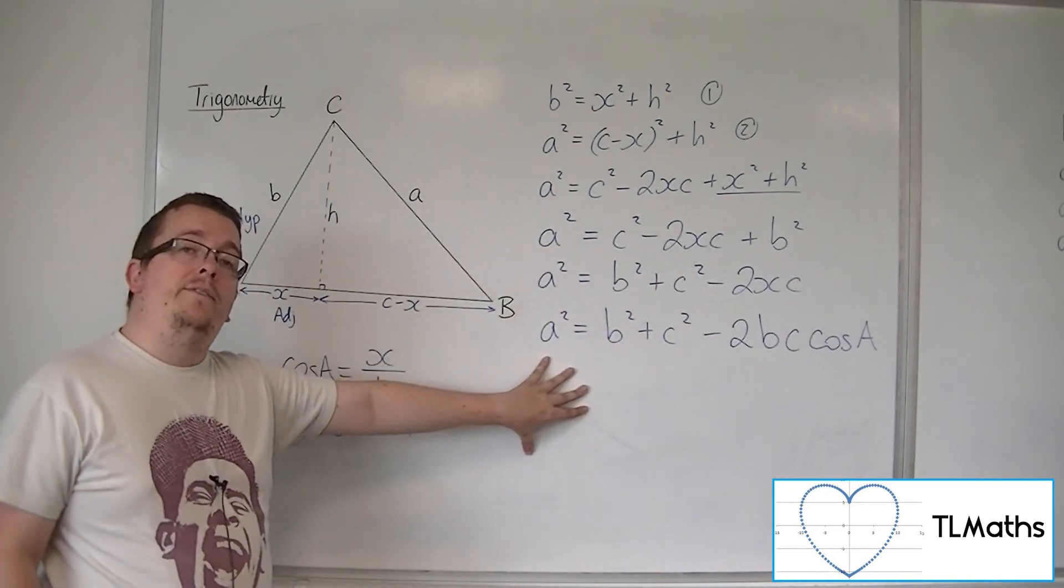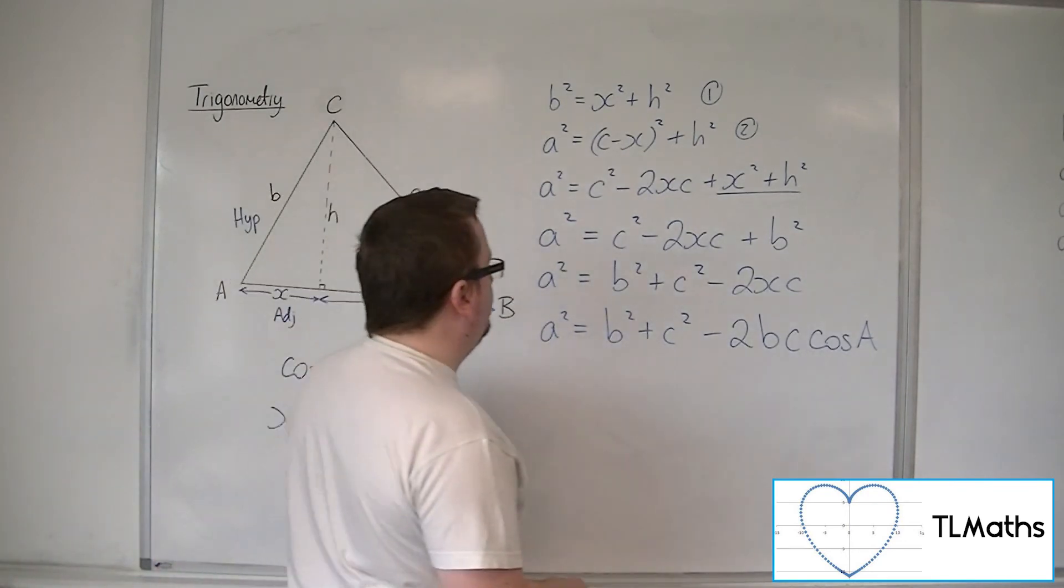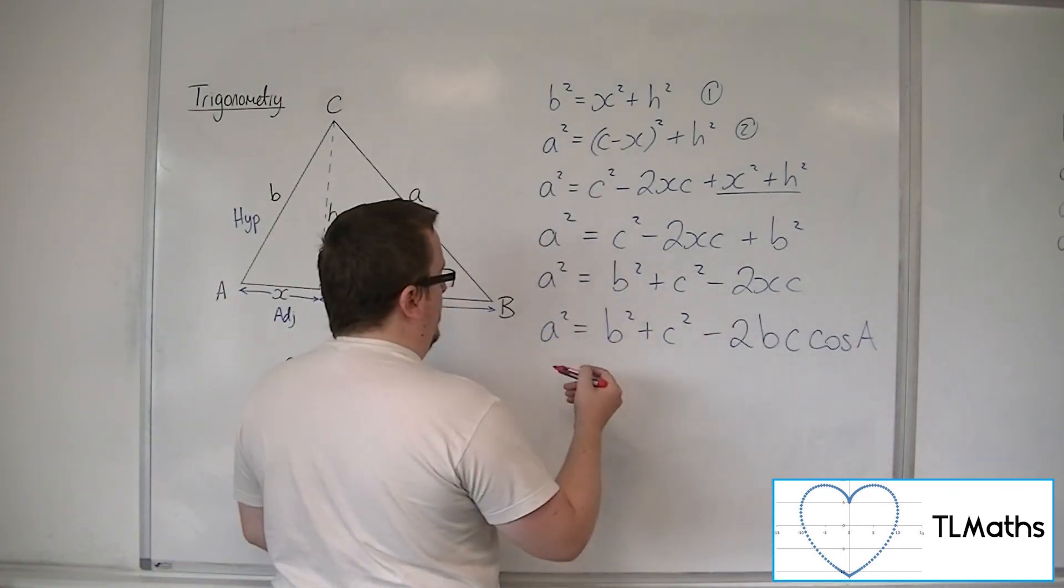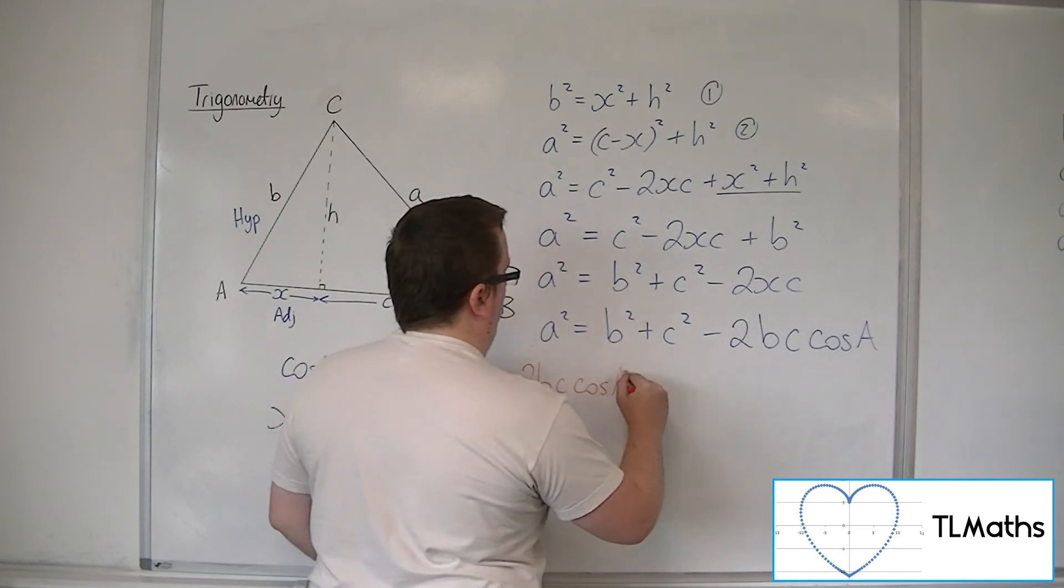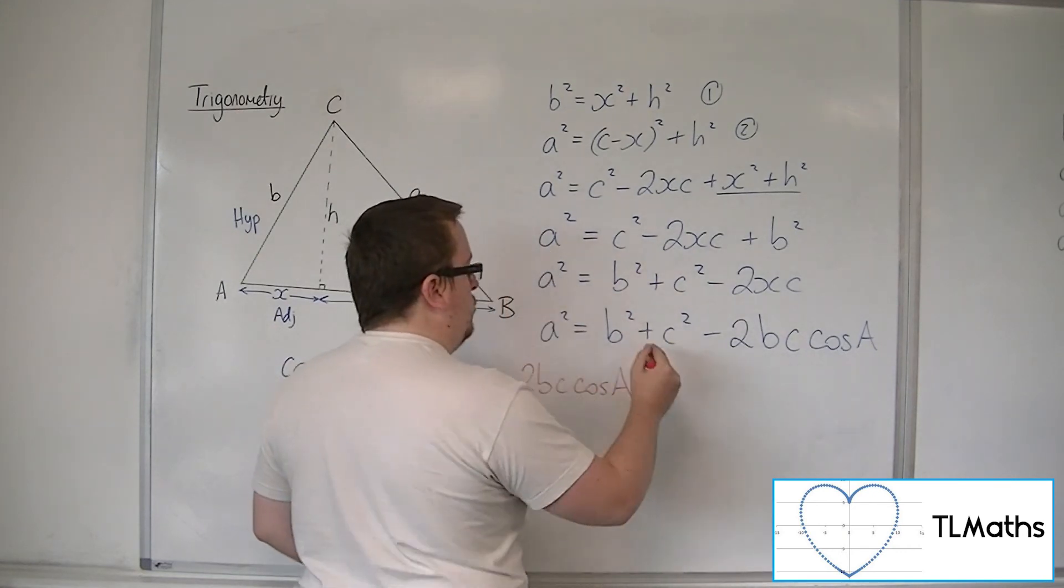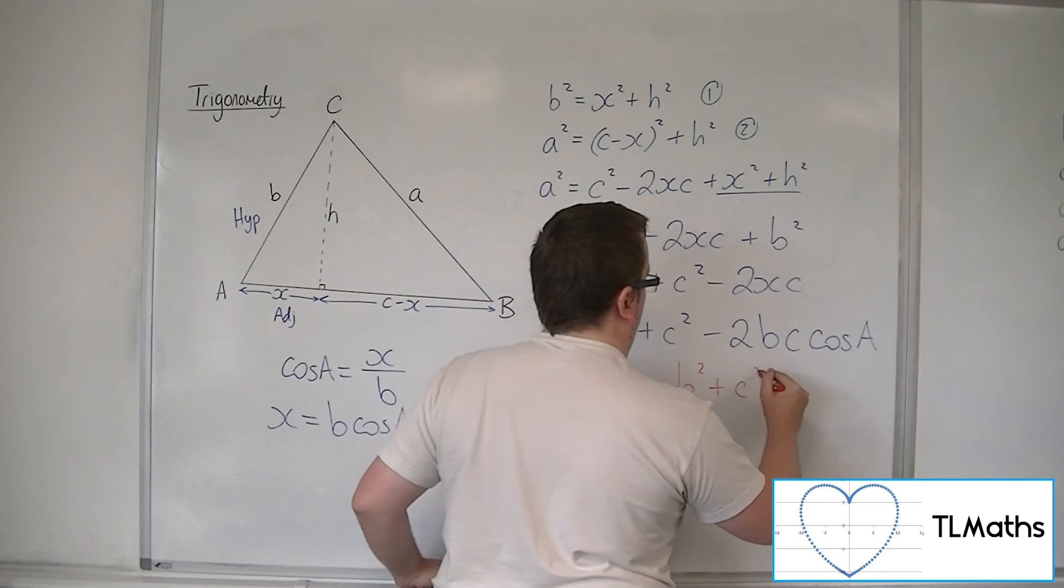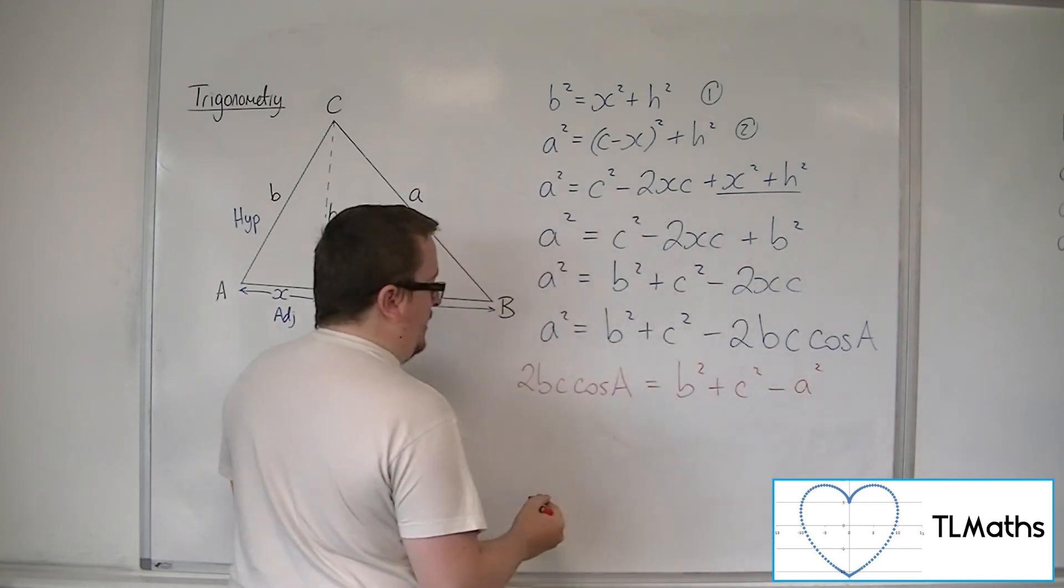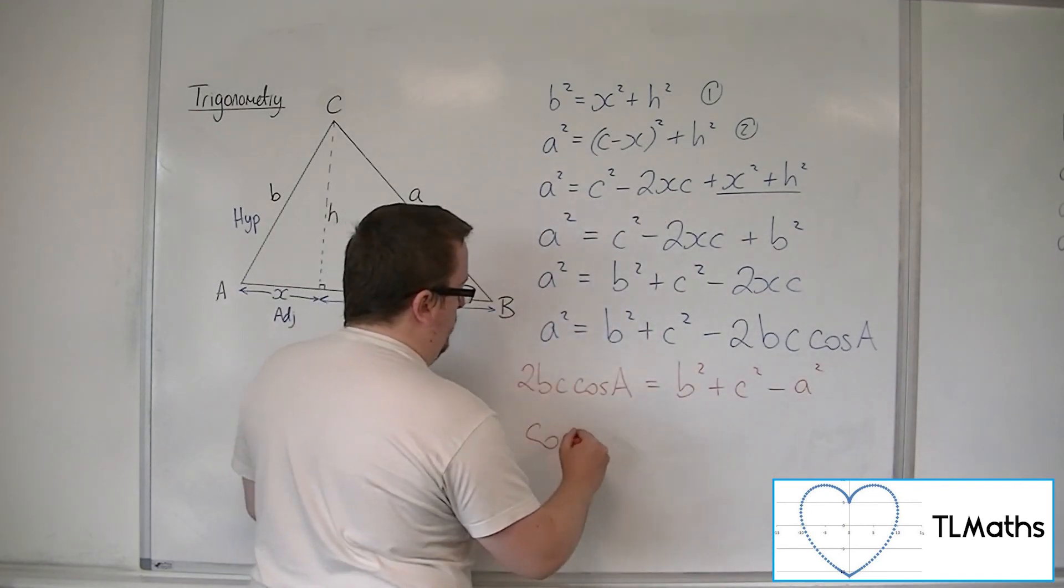So you might want to have it in a rearranged format. So if I add the 2BC cos A to both sides, subtract the A squared, then I can divide both sides by the 2BC.